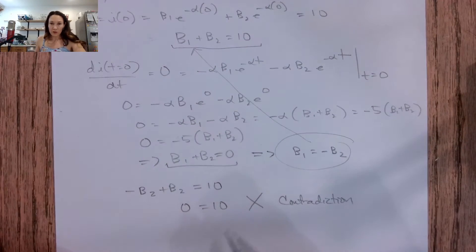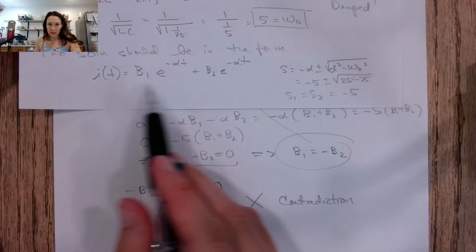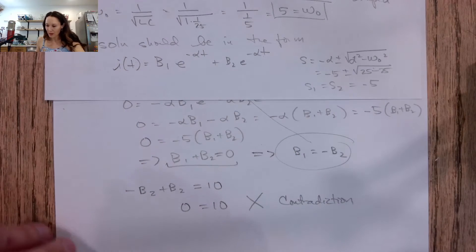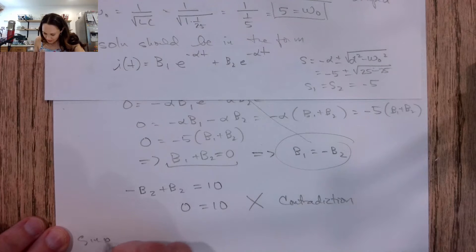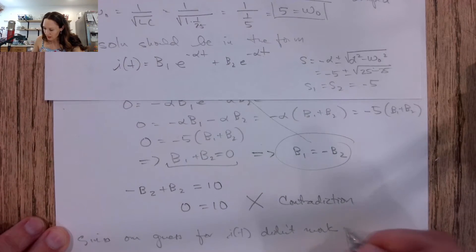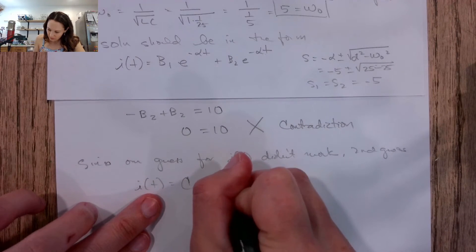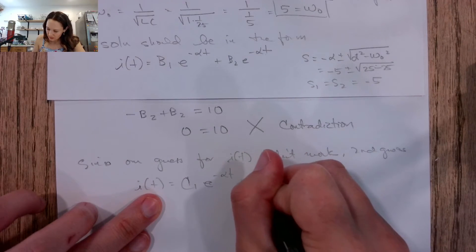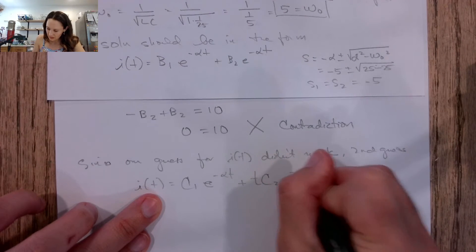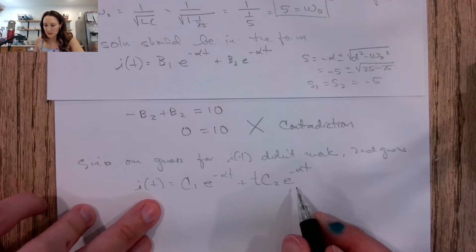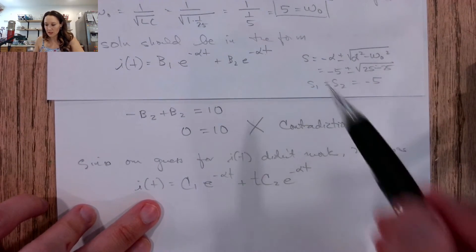Since our first guess for i(t) didn't work, we make a second guess. This is the regular process for solving differential equations when you have repeated roots. The second guess is very similar but we multiply a t by the second term: i(t) = C₁e^(−αt) + C₂·t·e^(−αt). Because the derivative of this form is different, when we apply initial conditions we shouldn't get a contradiction.